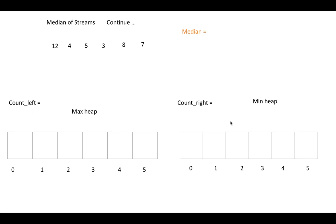These are our three variables needed during implementation: median, count_left, and count_right. Count_left is the count of elements currently in the max heap array, count_right is the count of elements in the min heap array, and the variable median — shown in orange — is the result we need to print.